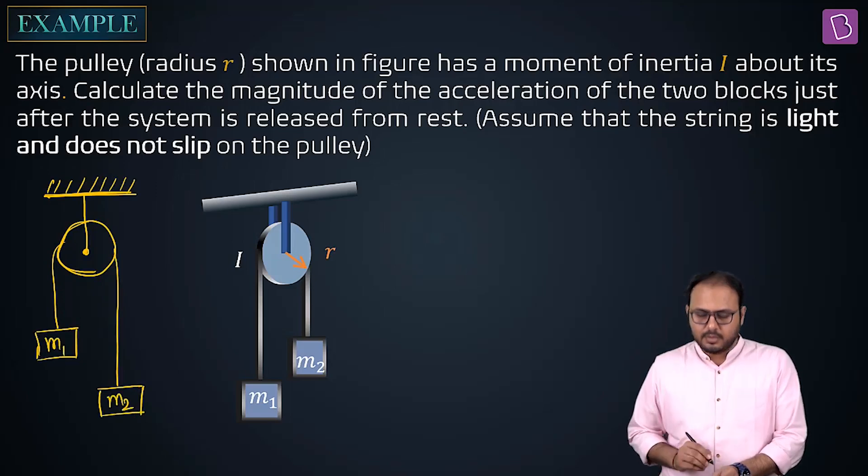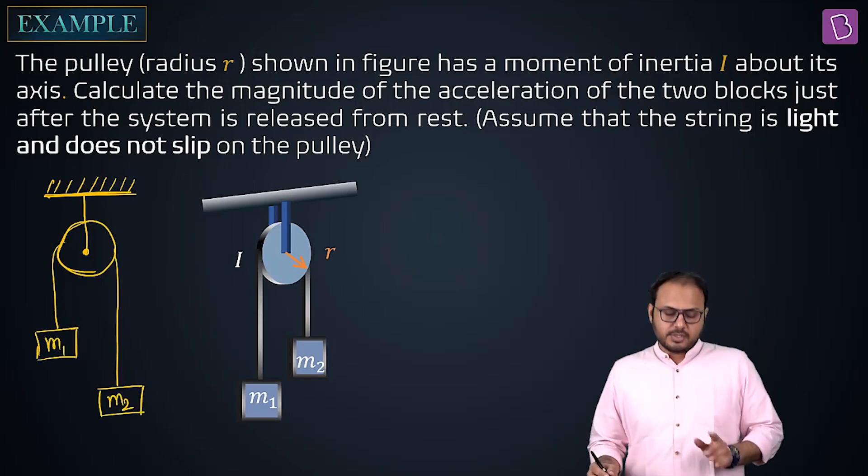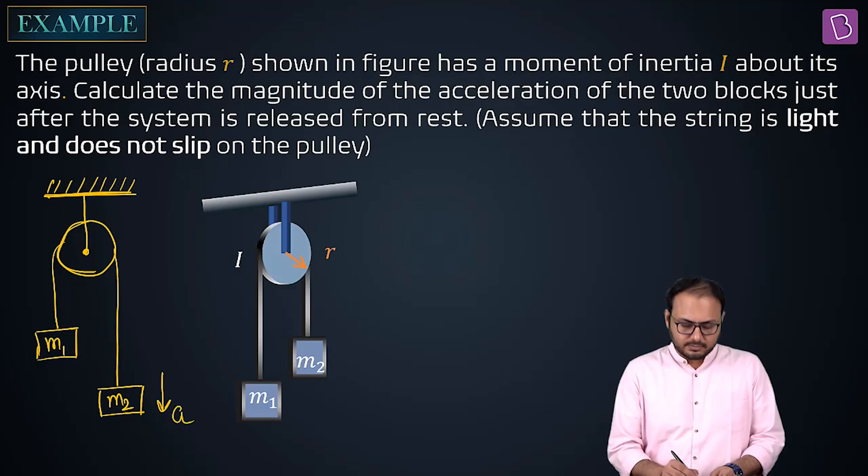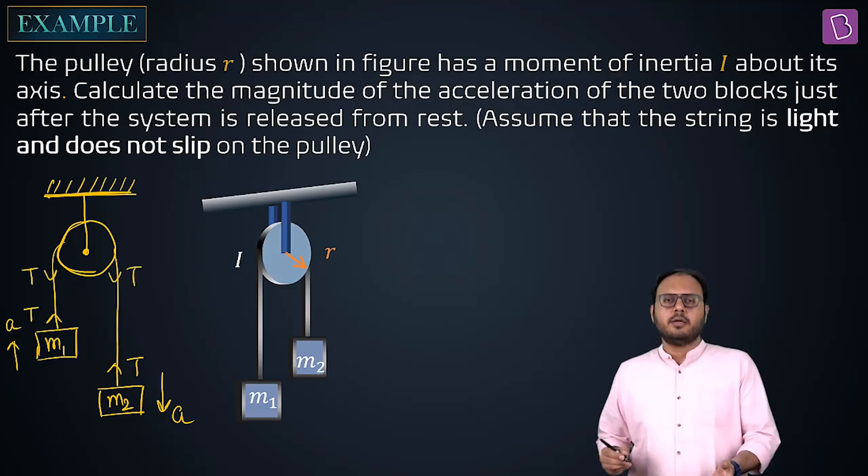M1, M2, this is old. Old string used to be two properties: string used to be light and inextensible, pulley used to be smooth and light. Remember, so this used to be our A, T, T. And do you remember this? Absolutely.